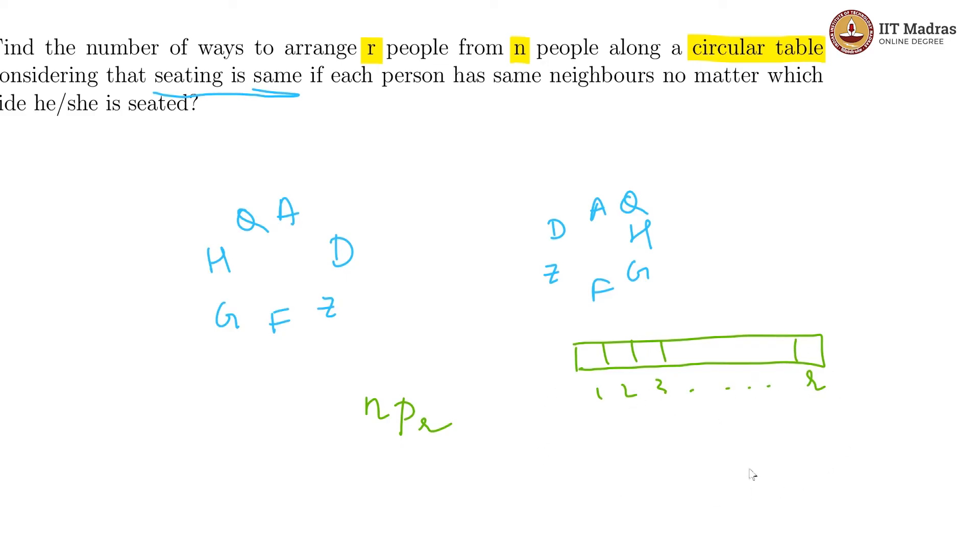Now, in a circular permutations you get R repetitions because it does not matter which person you start from. So, each of these can be the starting point and it will be the same circular permutation. So, we will get R repetitions. So, therefore, divided by R.